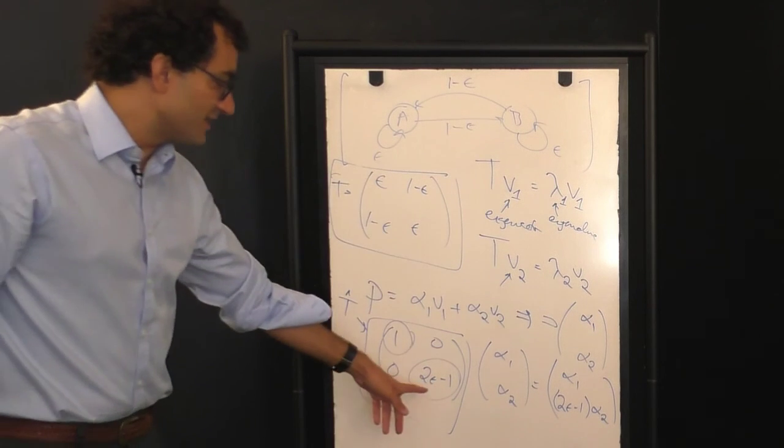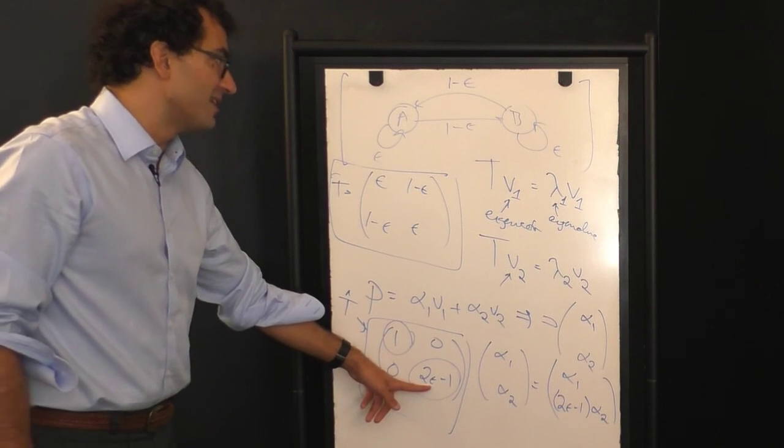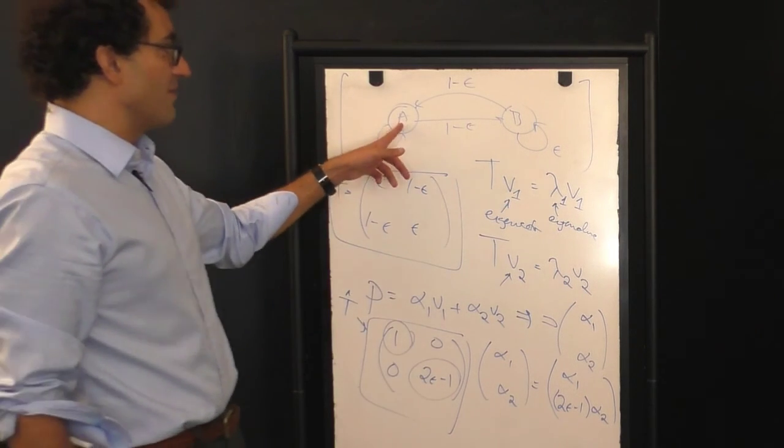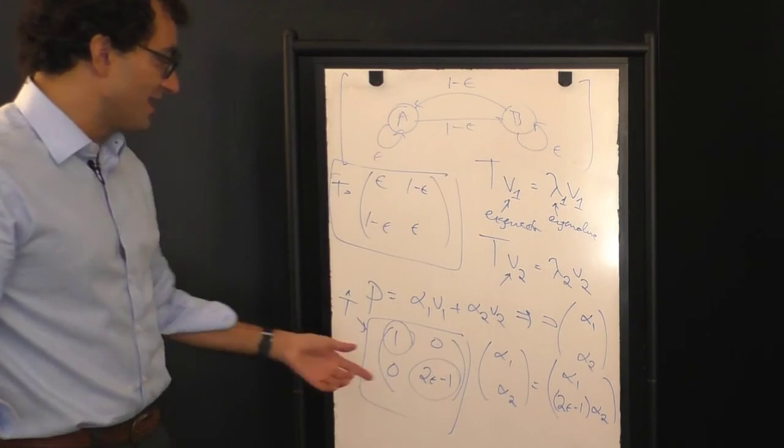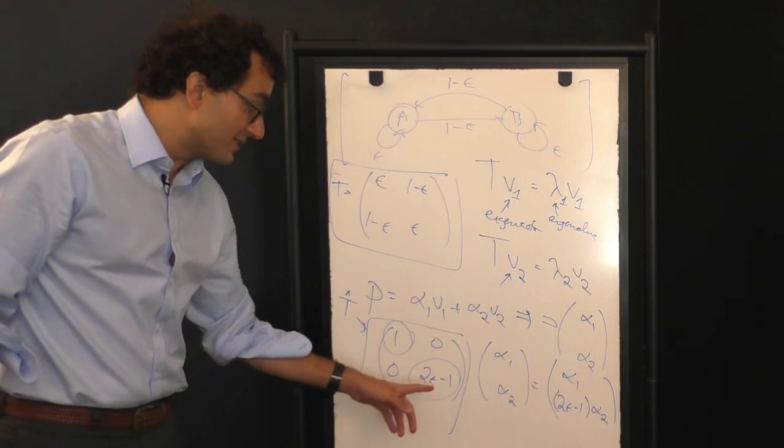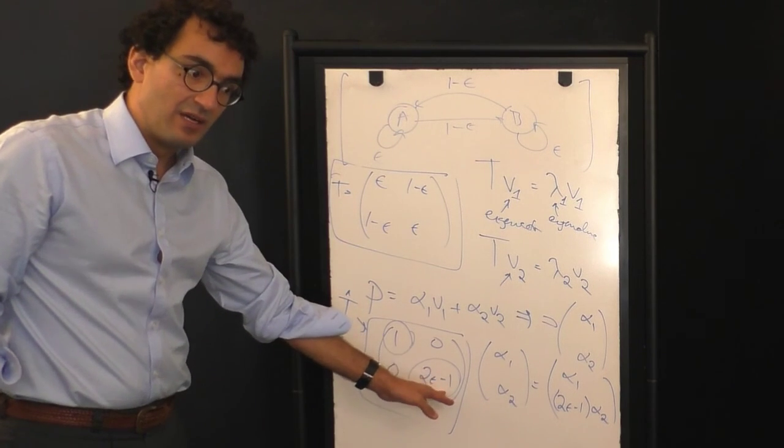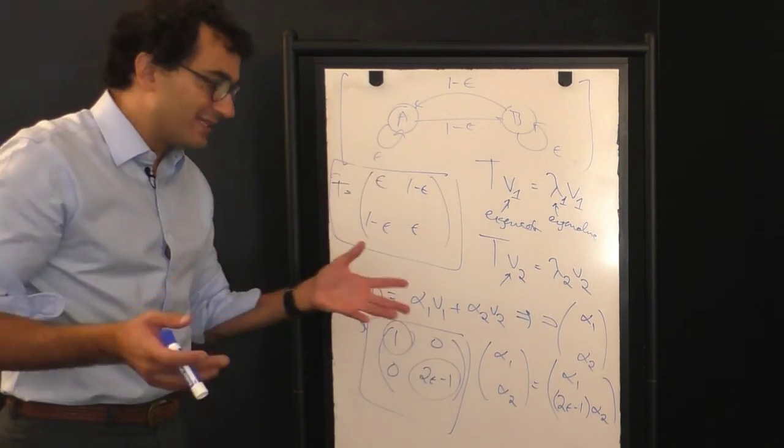So notice here, as long as epsilon is less than unity, as long as there's some probability for a transition between A and B, this term here will have an absolute value less than 1. Notice that if epsilon is less than 1 half, in fact, the second eigenvalue will be negative, but it still, in its absolute value, will be less than 1.